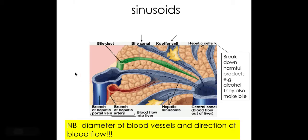You can see again that the branch of the hepatic portal vein has a wide lumen in comparison to the hepatic artery. Both are feeding into the sinusoid and then passing into the central canal, which then feeds into the hepatic vein.